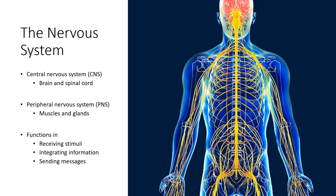The central nervous system, or the CNS, is basically made of the brain and the spinal cord. There's also the peripheral nervous system, or the PNS, that contains muscles and glands.